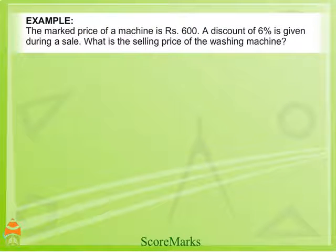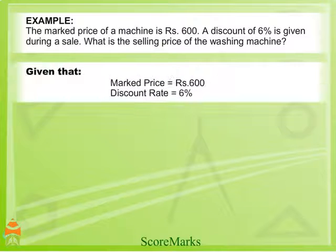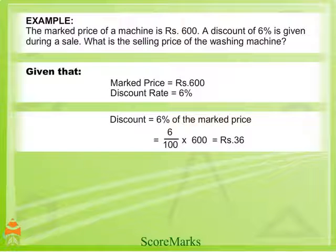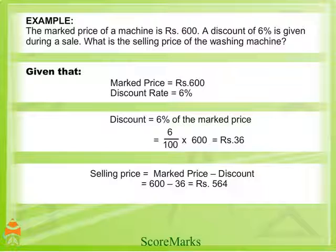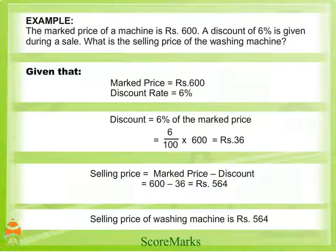Now let's solve an example. The marked price of a washing machine is Rs.600. A discount of 6% is given during a sale. What is the selling price of the washing machine? Given that marked price is equal to Rs.600 and discount rate is equal to 6%. Discount is equal to 6% of the marked price, that is 6 upon 100 into 600, which equals 36. Selling price is equal to marked price minus discount. Therefore, 600 minus 36 is equal to Rs.564. The selling price of the washing machine is Rs.564.